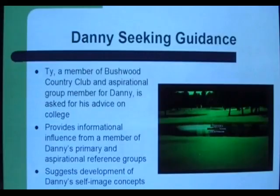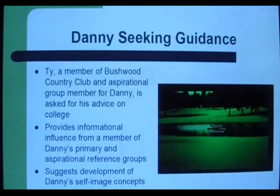The first slide we will observe establishes the plot of Caddyshack. Danny Noonan, a caddy at Bushwood Country Club, asked the advice of a member, Ty, for which he is caddying. It provides an example of Ty, a member of Danny's primary and aspirational reference groups, projecting informational influence on Danny.